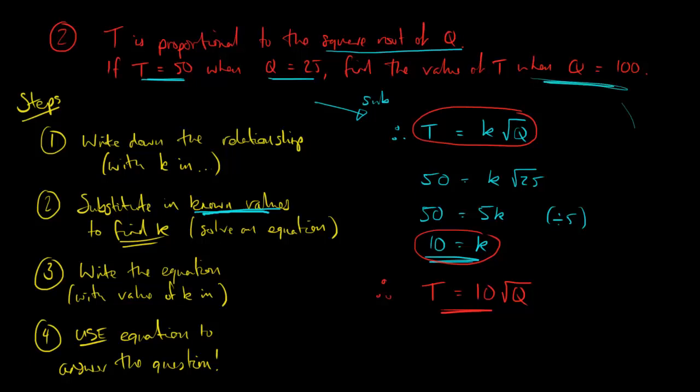So the value of t when q is 100. So let's just put q equals 100 into that formula. That will give me t directly. So when q equals 100, t will be 10 times the square root of 100. Which is, of course, 10. So 10 times 10 is 100. And that is my value for t.